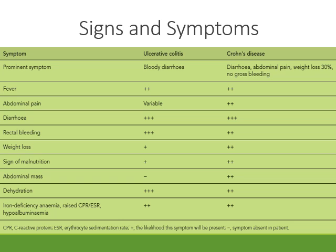We will now discuss the signs and symptoms of ulcerative colitis and Crohn's disease, and differentiate between them based on symptoms. The prominent symptom of ulcerative colitis is bloody diarrhea. In Crohn's disease, the patient will have diarrhea, abdominal pain, weight loss up to 30 percent, but no gross bleeding. The symptom of fever will be present in both ulcerative colitis and Crohn's disease with the same intensity.